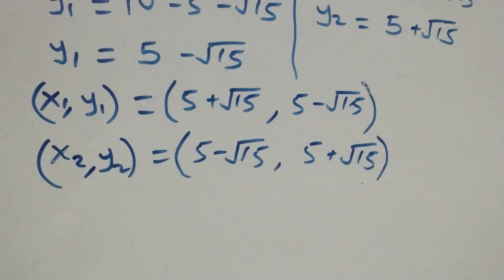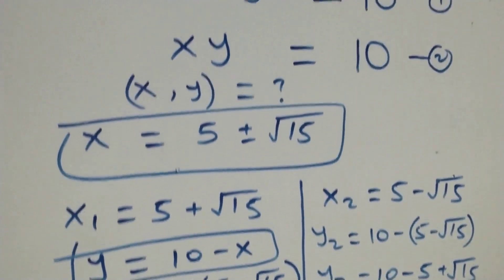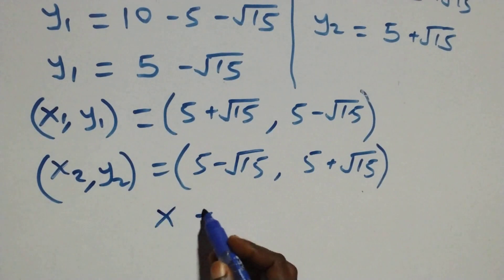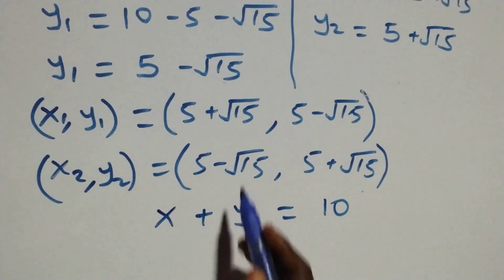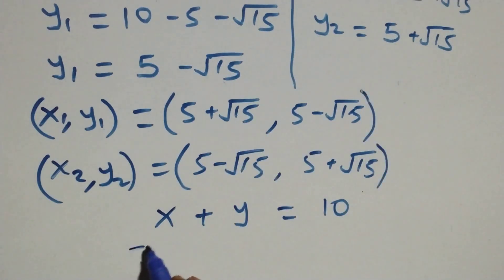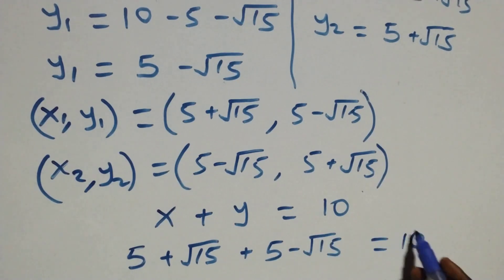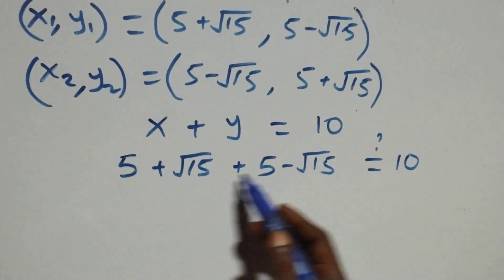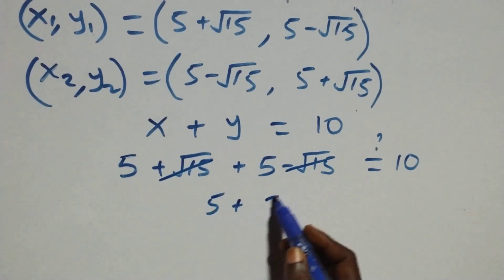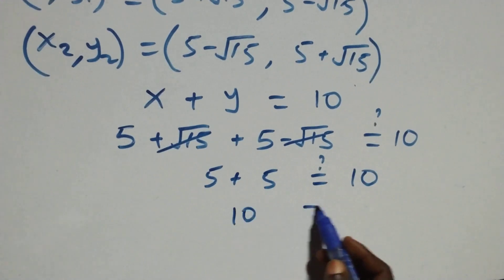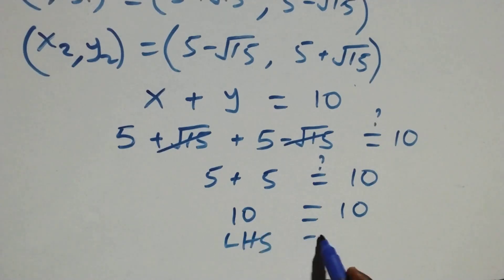When we check equation 1, which is x plus y equals to 10, we substitute the first solution: x is 5 plus root 15, plus y which is 5 minus root 15. The root 15 terms cancel each other and we are left with 5 plus 5, which equals to 10. Left hand side equals to the right hand side.